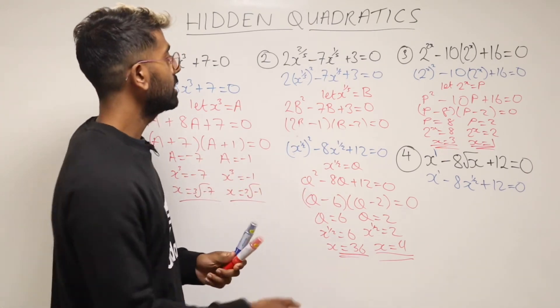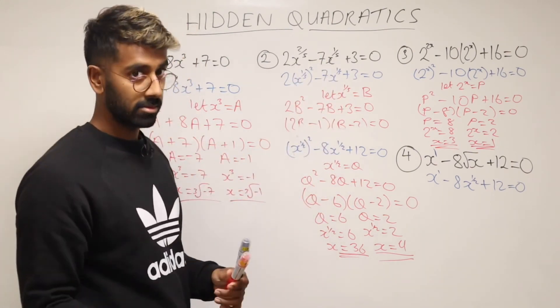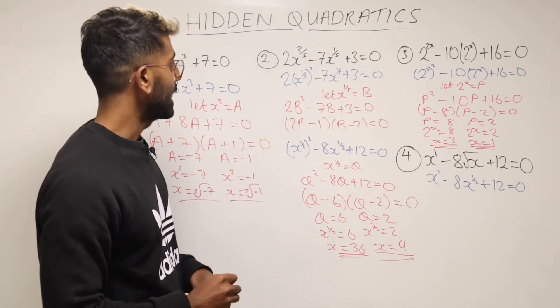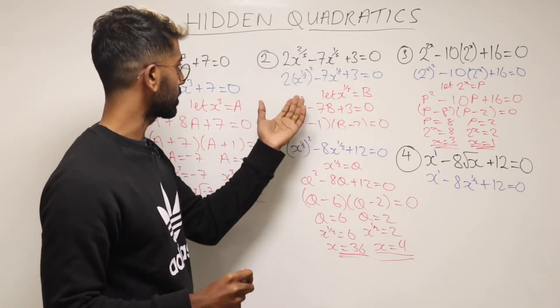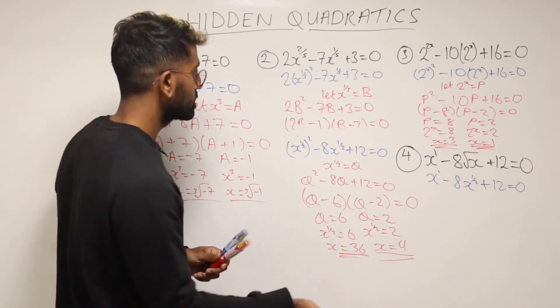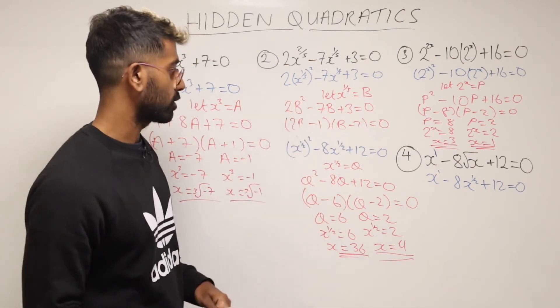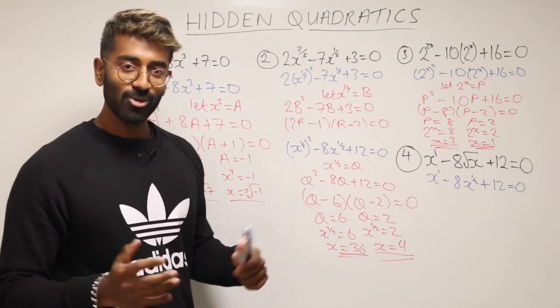So that there is how we can solve these equations here which are actually just hidden quadratics. So what have you got to look out for again? Look out for where the powers are exactly double of each other. And then you know that you can rewrite the bigger power like we did there. And then select a random letter, substitute it in, turn it into a quadratic and go and solve. That's it. Hopefully it all makes sense.